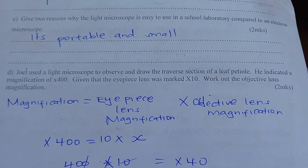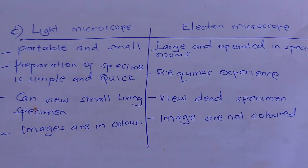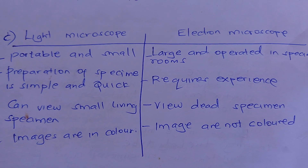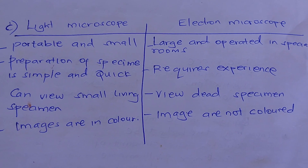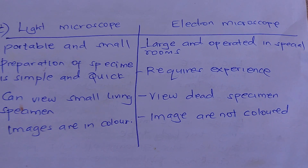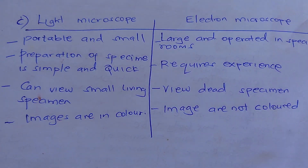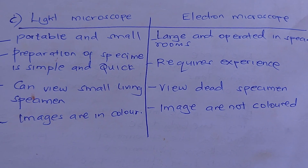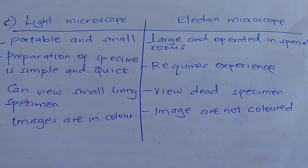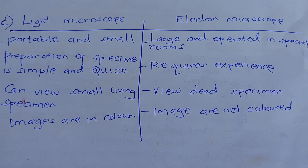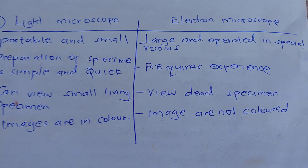Give two reasons why the light microscope is easy to use. The light microscope is portable and small, while the electron microscope is large and operated in special rooms. Preparation of a specimen for the light microscope is simple, whereas for the electron microscope it requires experience. You can view small living specimens in a light microscope, while the electron microscope views only dead specimens. Images in the light microscope are in color, while those in the electron microscope are not colored.